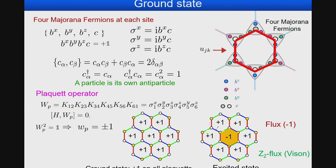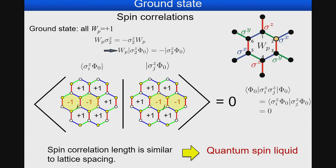In the Kitaev model, spins can be represented in terms of four Majorana fermions — a particle that is its own antiparticle. Under this constraint, a projection operator W_p commutes with the total Hamiltonian. Since W_p squared is unity, W_p can be taken as plus or minus one. In the ground state, all W_p take the value plus one. The excited state has W_p equal to minus one, called the Z2 flux vison. The Kitaev spin liquid has very short spin correlation lengths — similar to the lattice spacing — representing a quantum spin liquid with extremely short spin correlation lengths.